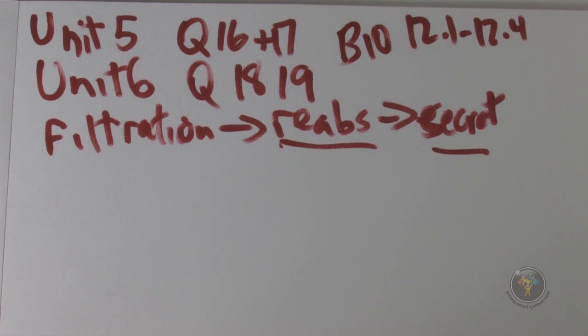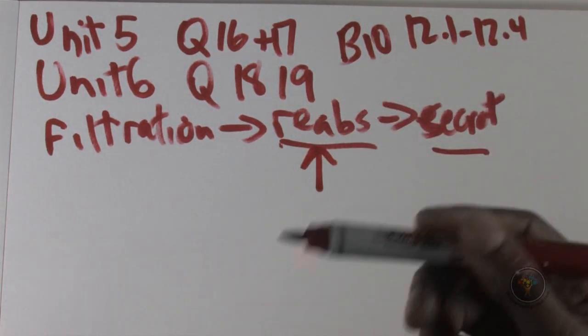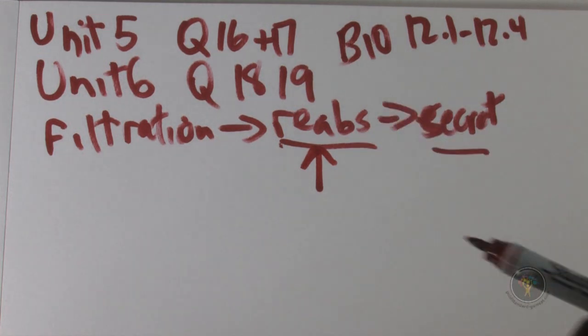So clearly we have glucose in the blood, we have none in the filtrate, and it's because of this: the glucose is being resorbed back into the bloodstream, back into our bodies. So that's answer choice A.